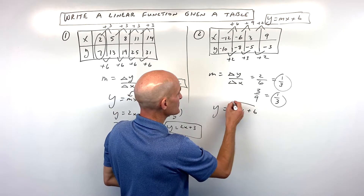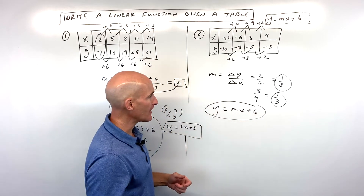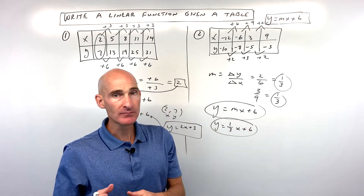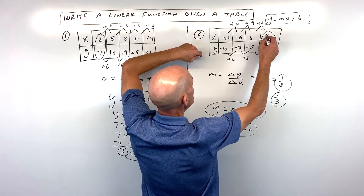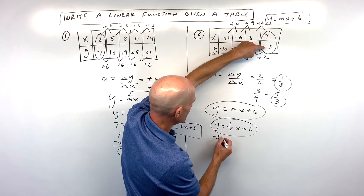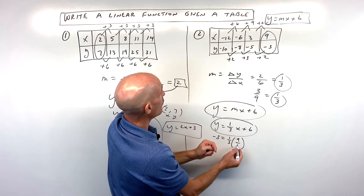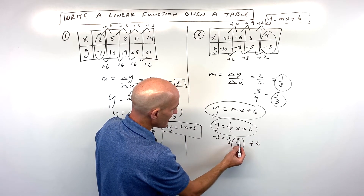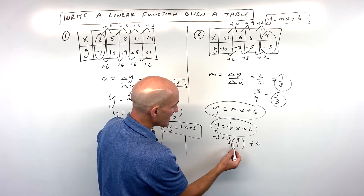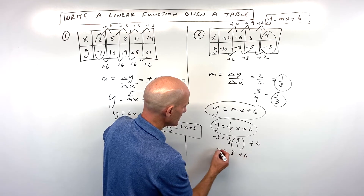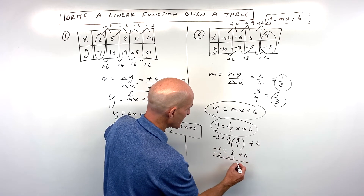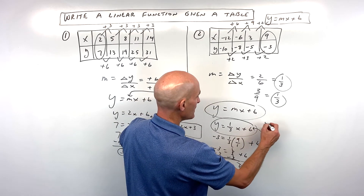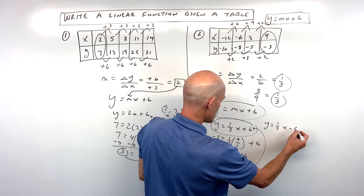Now we go to our formula y equals mx plus b — the slope-intercept form of the equation of a line. We put in our slope: y equals one third x plus b. To find b, we pick a set of points, say nine comma negative three. So when y is negative three and x is nine — written as nine over one — we get: negative three equals one third times nine over one, plus b. One times nine is nine, three times one is three, so nine divided by three is three. Subtract three from both sides, and b is equal to negative six. So our equation is y equals one third x minus six.